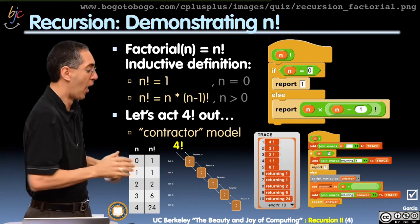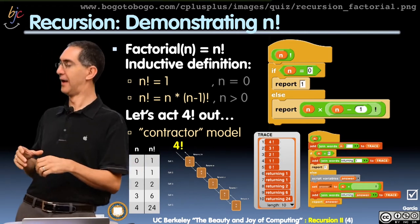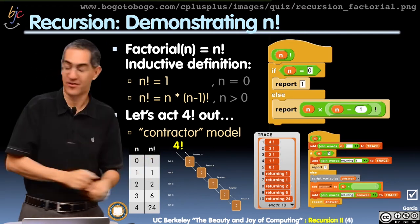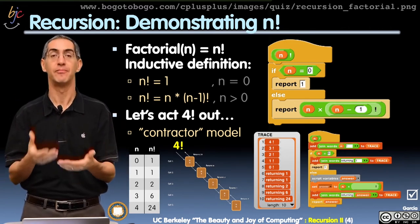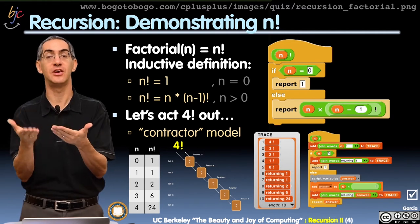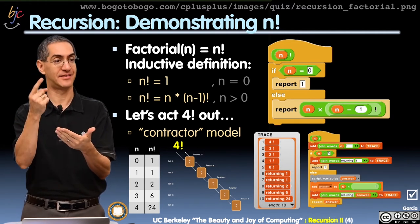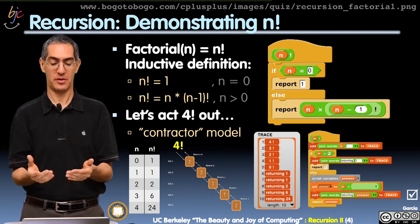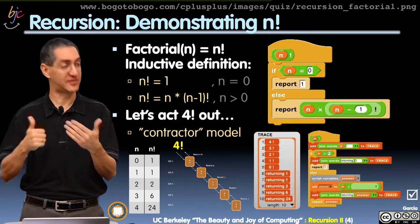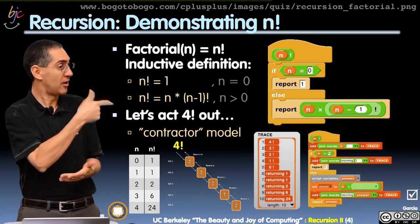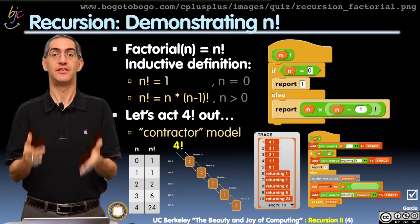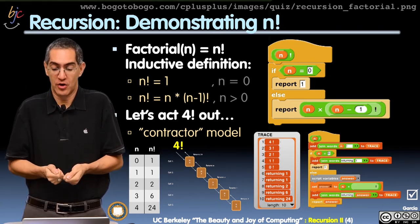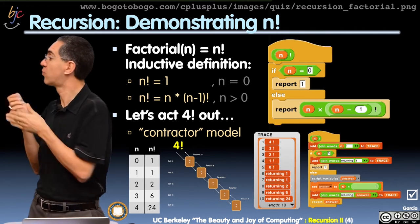Wake up. I need 0 factorial. 0 factorial, OK, is n equal to 0? Yes, base case. OK, I'm going to report 1 to the person who hired me. There are five people waiting for their answer, all in a line. 0 factorial, I'm going to return 1. 0 factorial is 1.